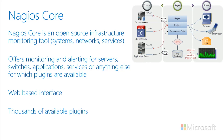Nagios Core is an open-source infrastructure monitoring tool. It allows you to monitor your systems, your networks, and services running on those systems. It offers monitoring and alerting for servers, switches, applications, services, or anything else for which a plugin is available. It has a web-based interface, and there are thousands of available plugins that you can install to monitor different things.